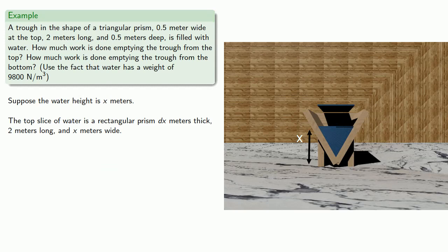This means the volume of this rectangular slab is 2x dx. Since water has a weight of 9,800 newtons per cubic meter, the weight will be 2x times 9,800 dx.